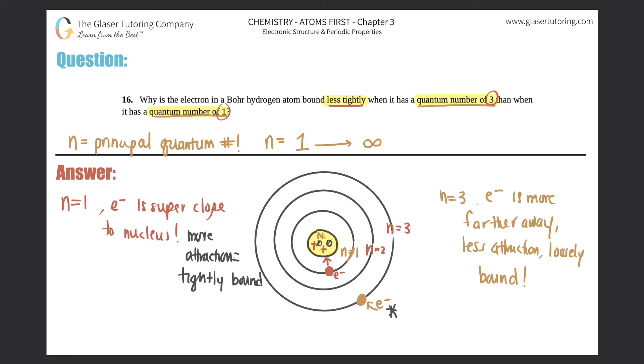So to answer this question: Why is the electron in the Bohr hydrogen atom bound less tightly when the quantum number is three than one? Because at n equals three, the electron is farther away, which means less attraction. That's it.